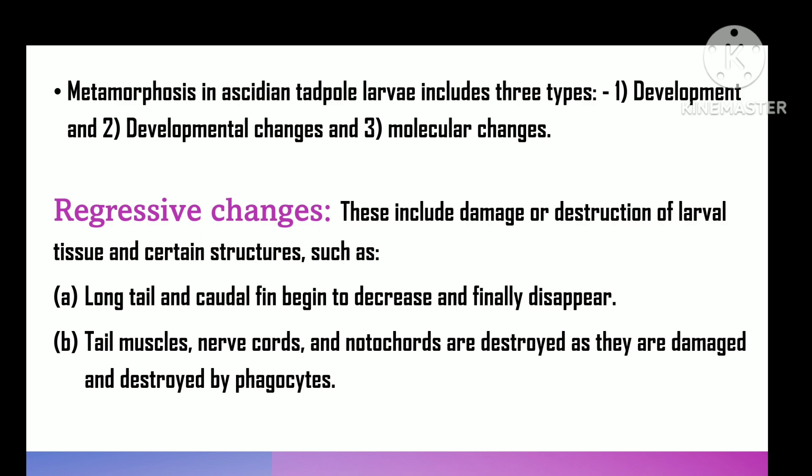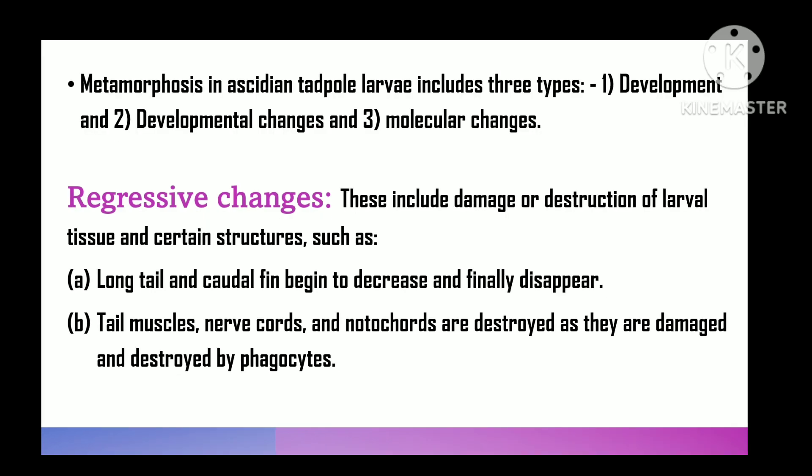Metamorphosis in ascidian tadpole larvae involves three types of changes: retrogressive, progressive, and molecular changes. Retrogressive changes involve degeneration or destruction of larval tissues and some structures, as follows.